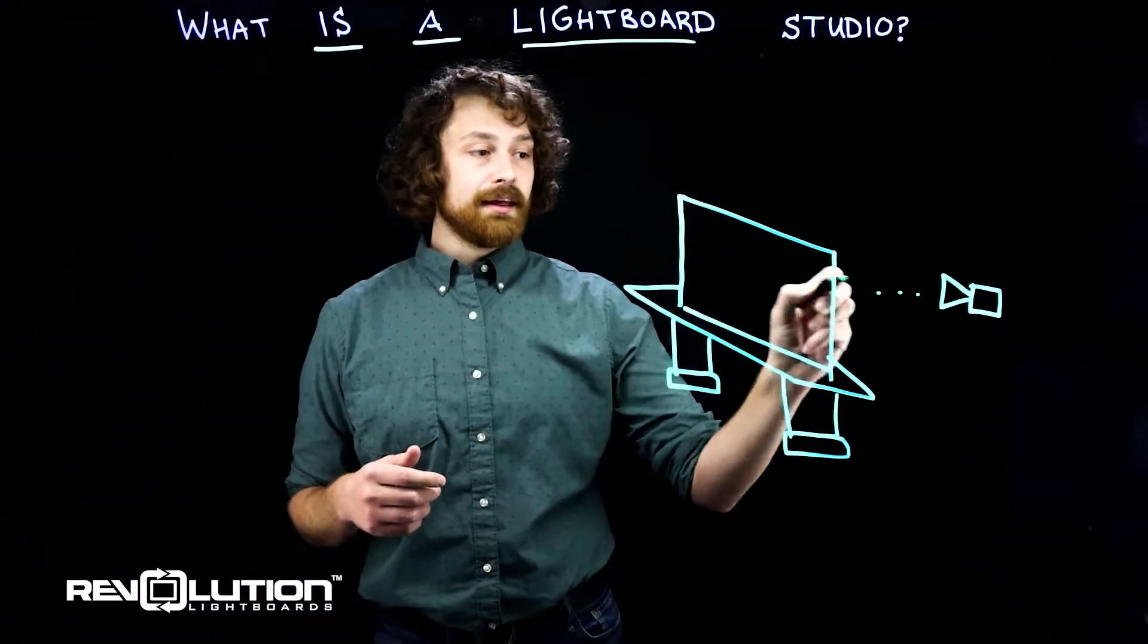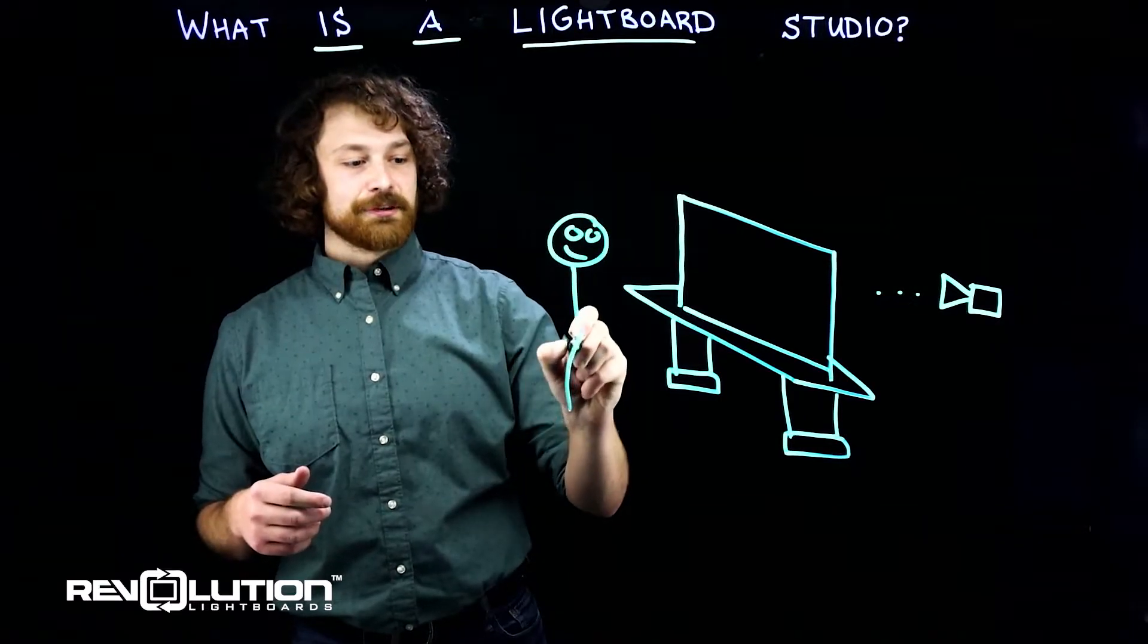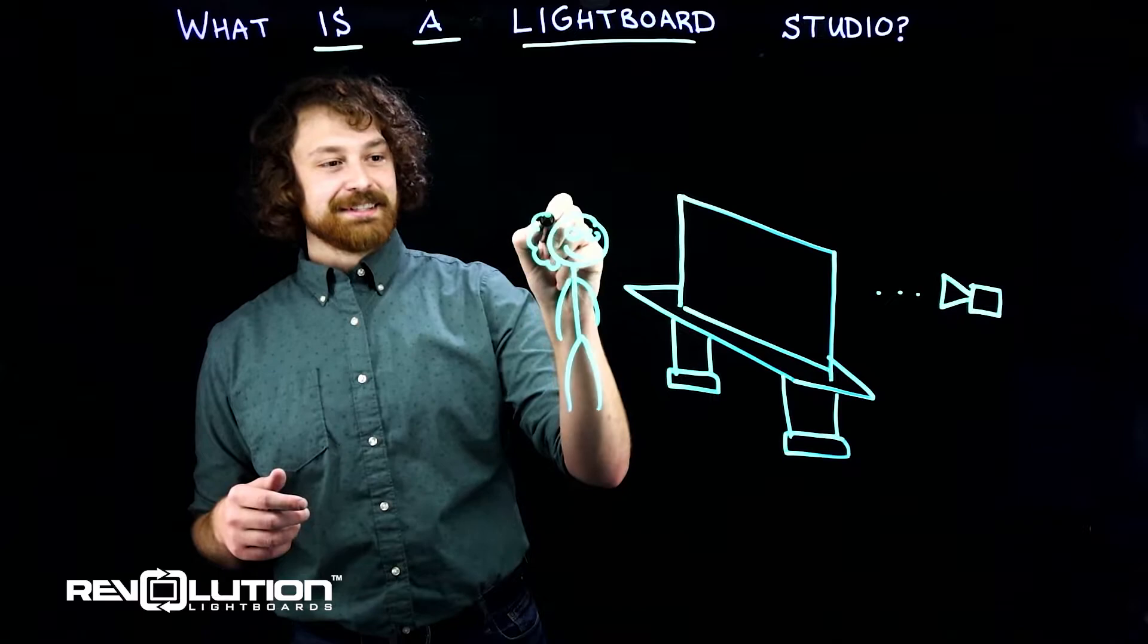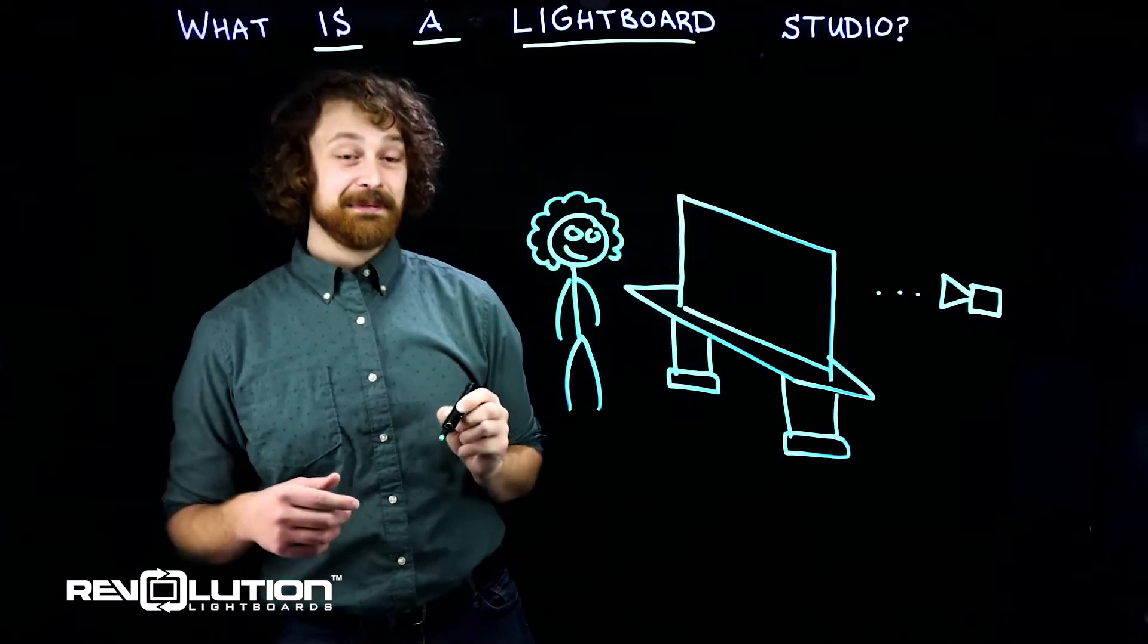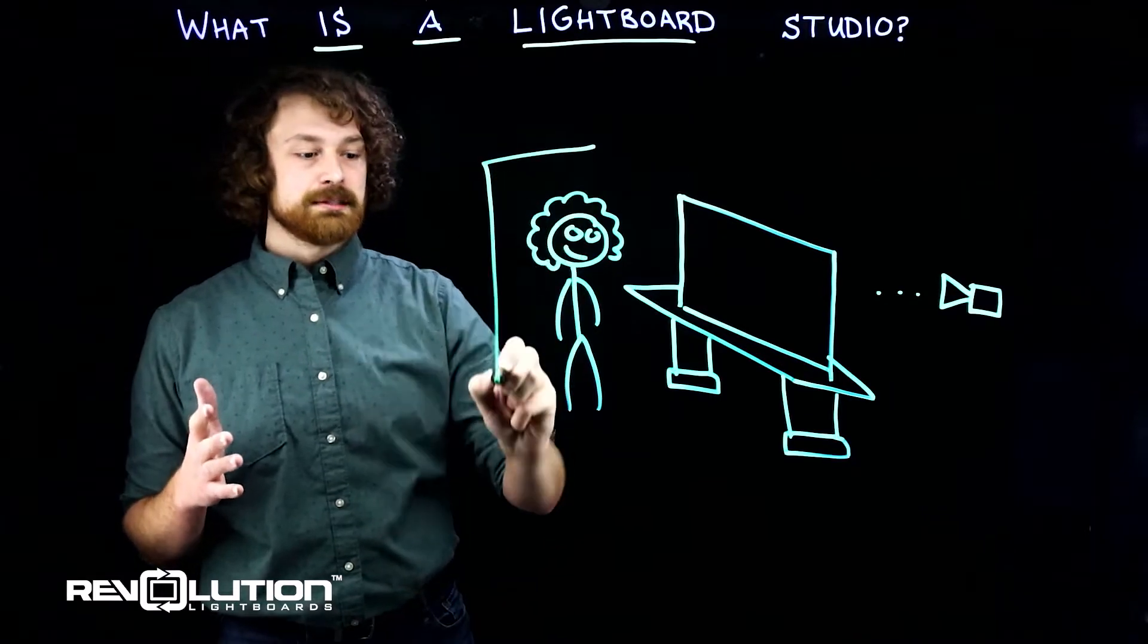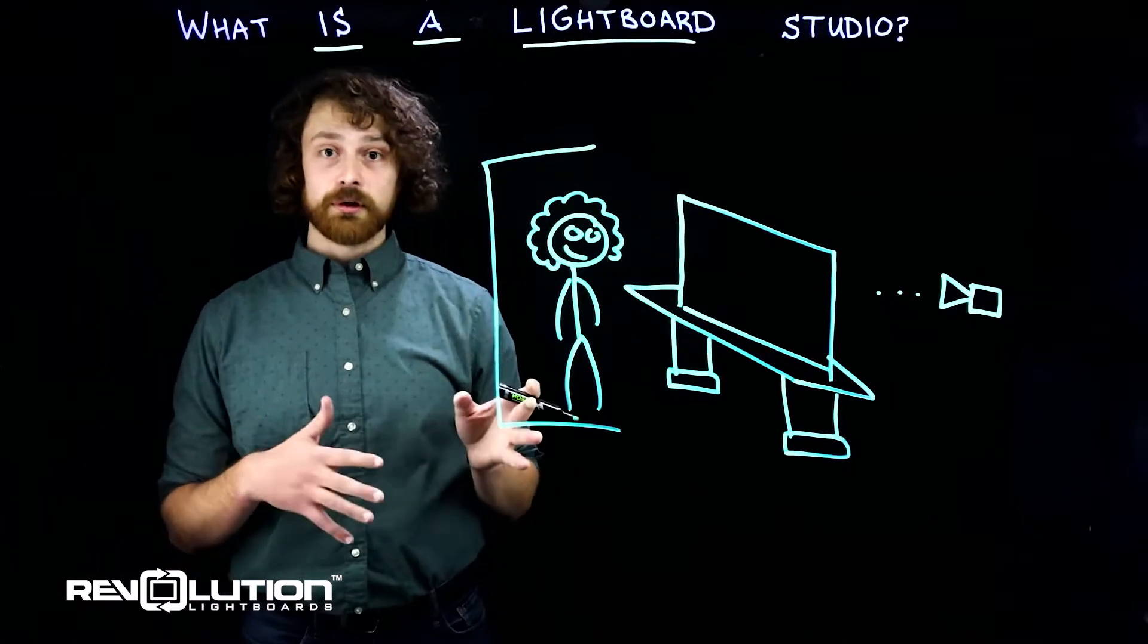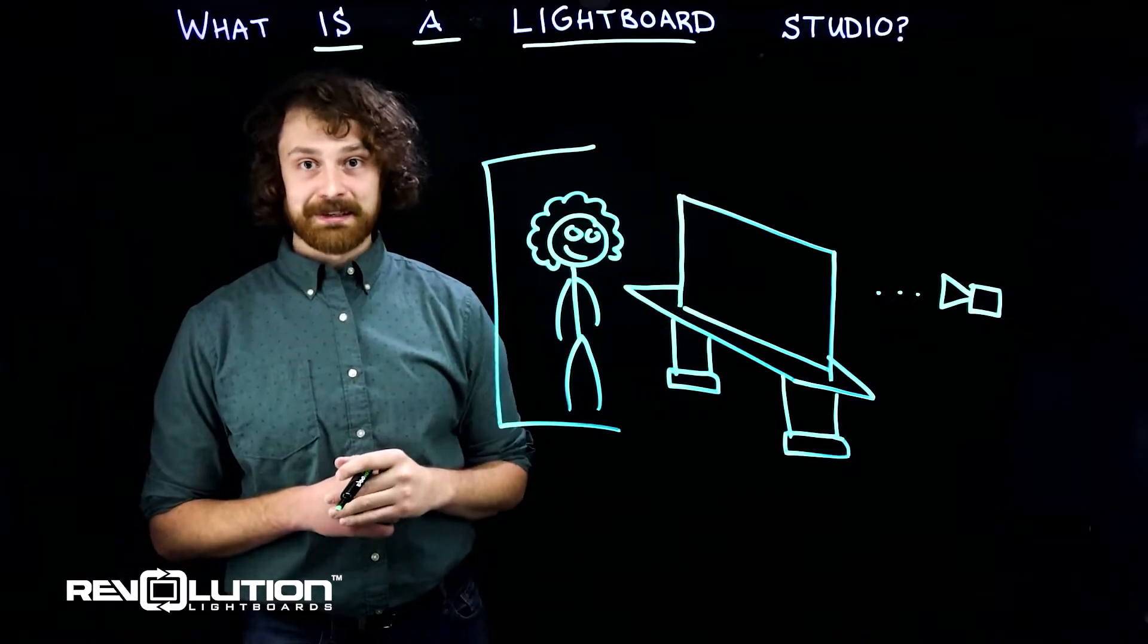This camera shoots through the glass towards a presenter on the other side, and if that presenter is me, then this presenter has curly hair, at least right now. Behind the presenter is a black backdrop. This backdrop allows the writing that you make on the board to really pop and be the focal point, as well as your face and hands while you're presenting.